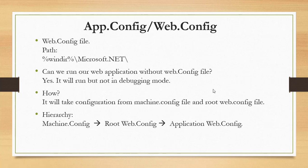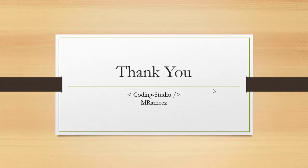machine.config holds global configuration, some properties of which are overridden for web applications in the root web.config, and further inherited by the application-level web.config. If an application has no web.config, it automatically takes its configuration from machine.config and root web.config. That covers the configuration files used in .NET based applications — thank you for watching, please like, share, and subscribe. This is Coding Studio.